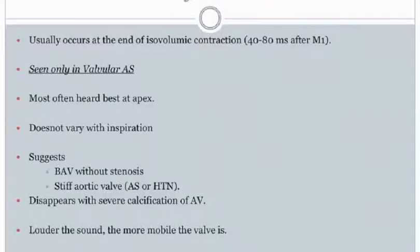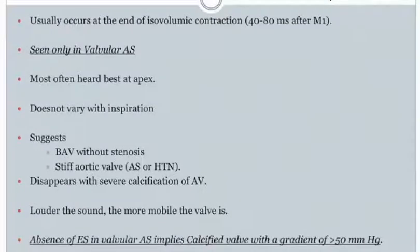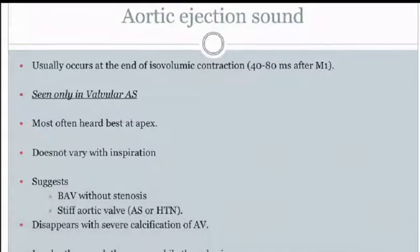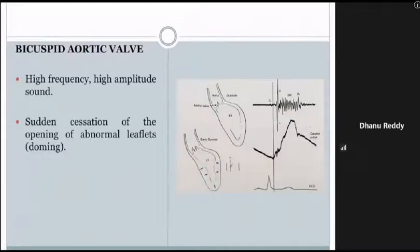The aortic ejection sound occurs at the end of isovolumetric contraction, 40 to 80 milliseconds after M1. It is seen only in valvular aortic stenosis and is best heard at the apex. It does not vary with inspiration. Presence of an aortic ejection sound suggests bicuspid aortic valve without stenosis or mobile valvular aortic stenosis. The louder the sound, the more mobile the valve. Absence of ejection sound in valvular aortic stenosis implies a calcified valve with gradient greater than 50 mmHg. In bicuspid aortic valve, a high-frequency, high-amplitude ejection sound is common, due to sudden cessation of the abnormal doming opening of the leaflets.